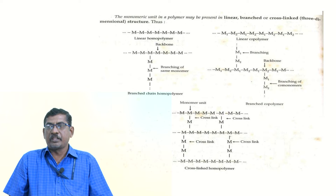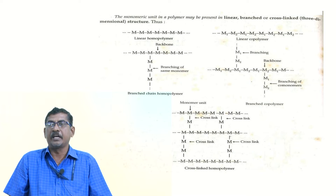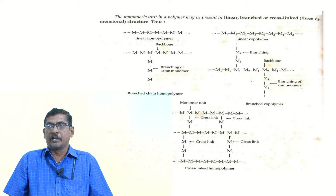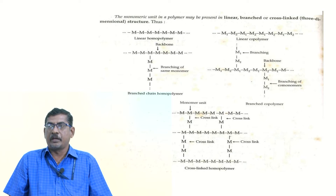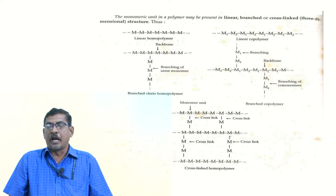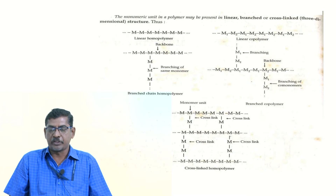The next type is the cross-linked homopolymer, where two or three linkages are present in the main chain. Similarly, copolymers are also classified into three types: linear copolymer, branched copolymer, and cross-linked copolymer. The linear copolymer has two types of monomers in a straight chain, and the branched copolymer has a branch attached to that straight chain.